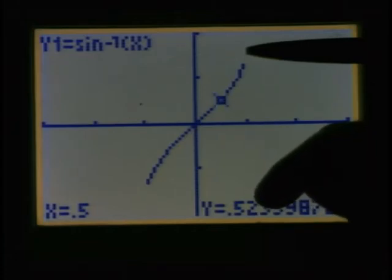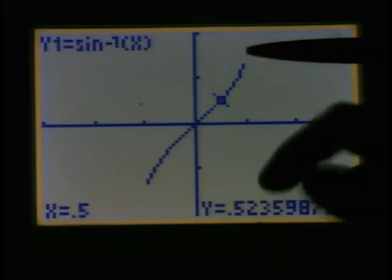If I picked a half as my input, this is pi over 6. Think about the value, pi over 6, a little bigger than a half. Okay? So it's a function, new function for you.